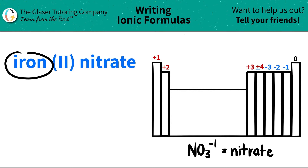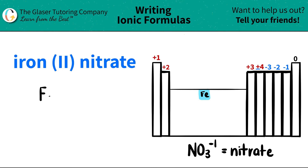First, we'll work with iron. If we scan the periodic table for where iron is, iron is right in the middle here, and iron is always Fe. So I'm going to say that iron is Fe.